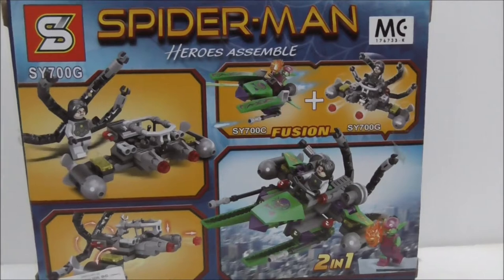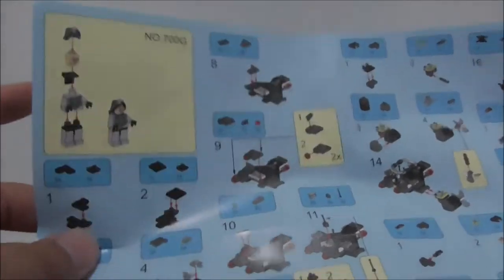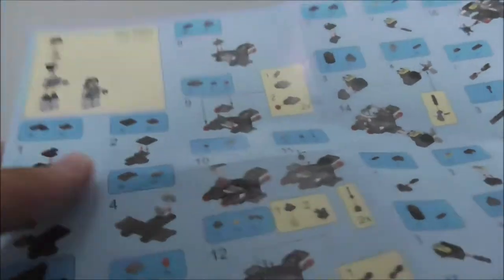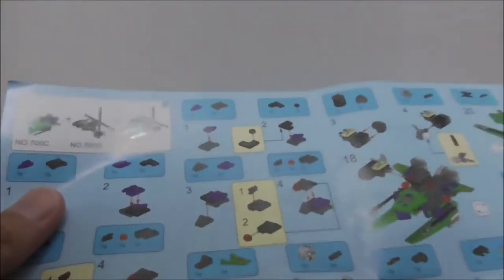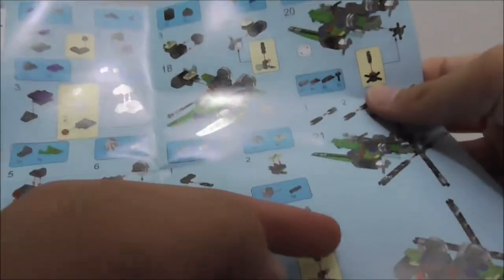Aside from that, that's pretty much it for the box. So this is the instruction manual right here. You can see it's a pretty big sheet of paper with a lot of instructions in it. The back shows you how you can combine all two of the sets.